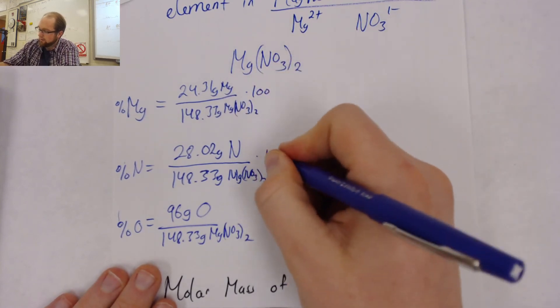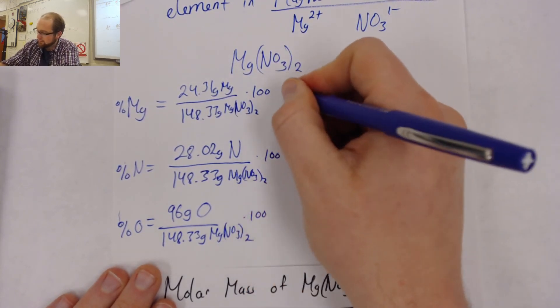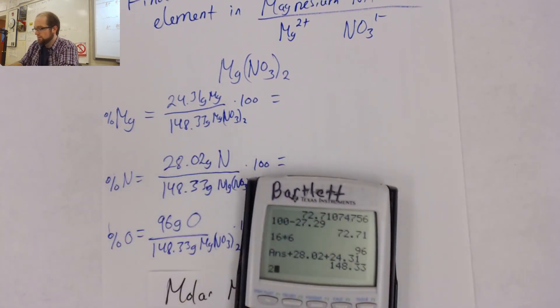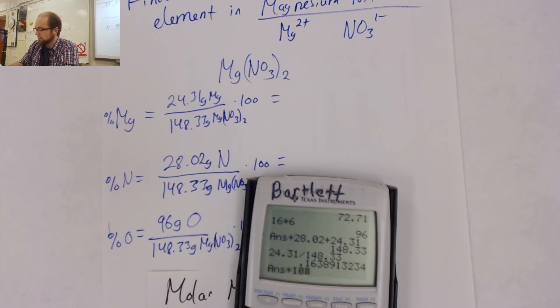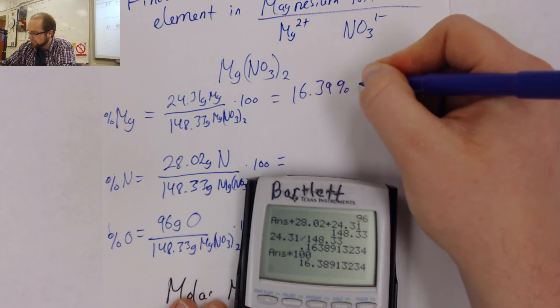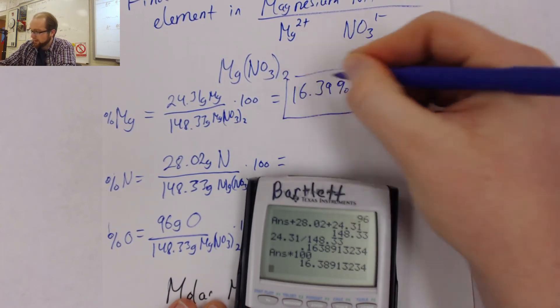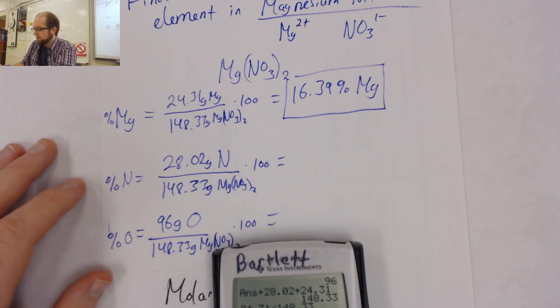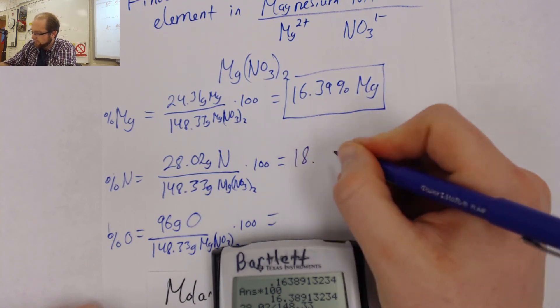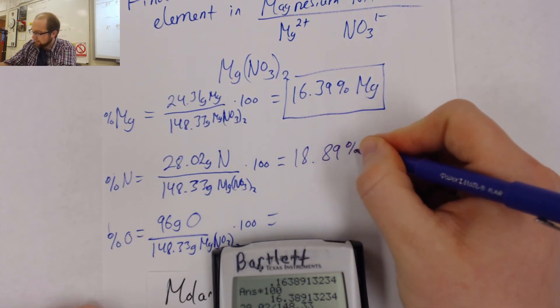Don't forget, we're going to multiply all these by 100 as we plug them into our calculators. 24.31 divided by 148.33 times 100 gives me 16.39% magnesium. Don't get these guys mixed up. Make sure you include their units as part of the problem. Nitrogen, 28.02 divided by the same number, 148.33, multiply that by 100, and we get 18.89% nitrogen.